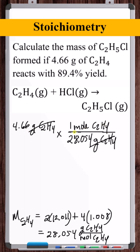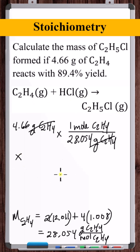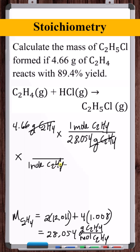Now that we're in moles, we can use stoichiometric equivalencies to get to ethyl chloride. This chemical equation is balanced, and we see that for every one mole of ethylene consumed, one mole of ethyl chloride is produced.